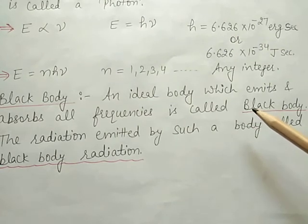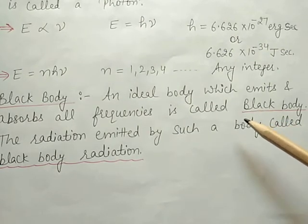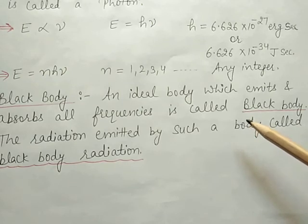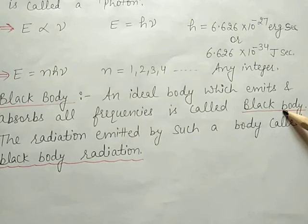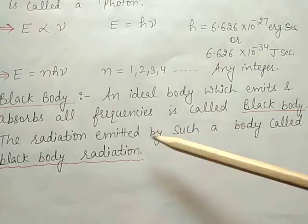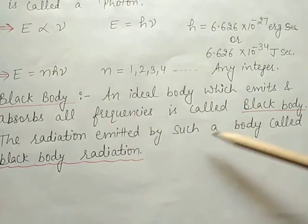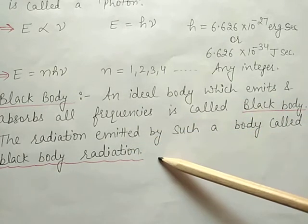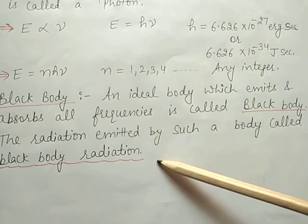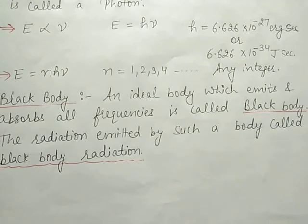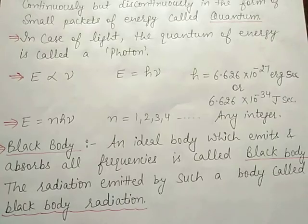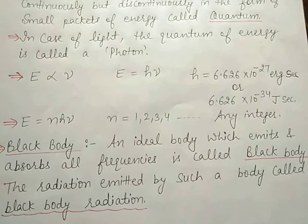So the ideal body that emits and absorbs radiation of all frequencies is called a black body, and the radiation emitted by such a body is called black body radiation. Thank you, students.